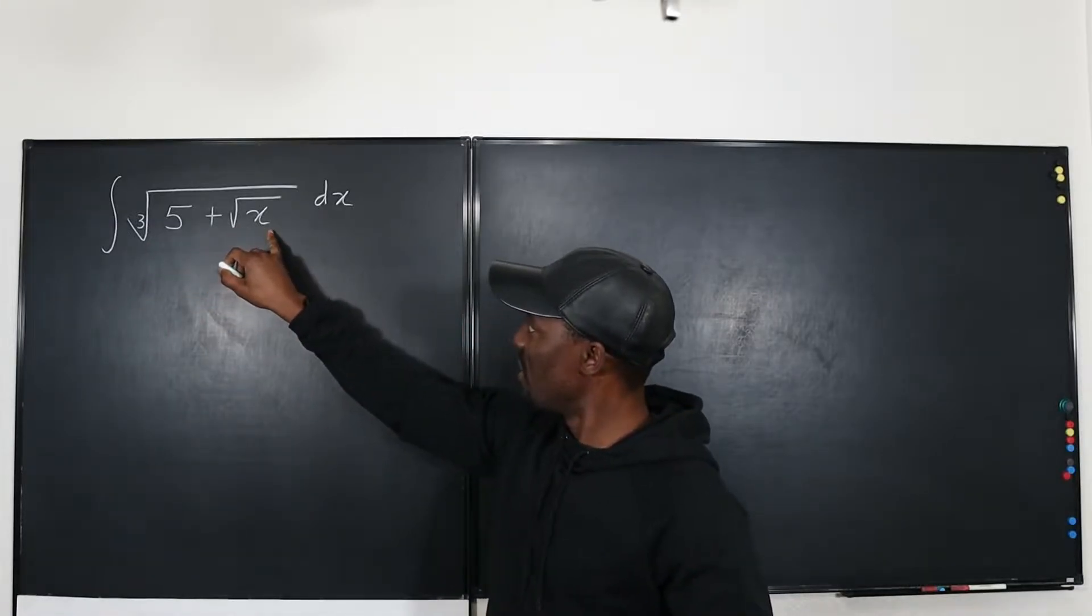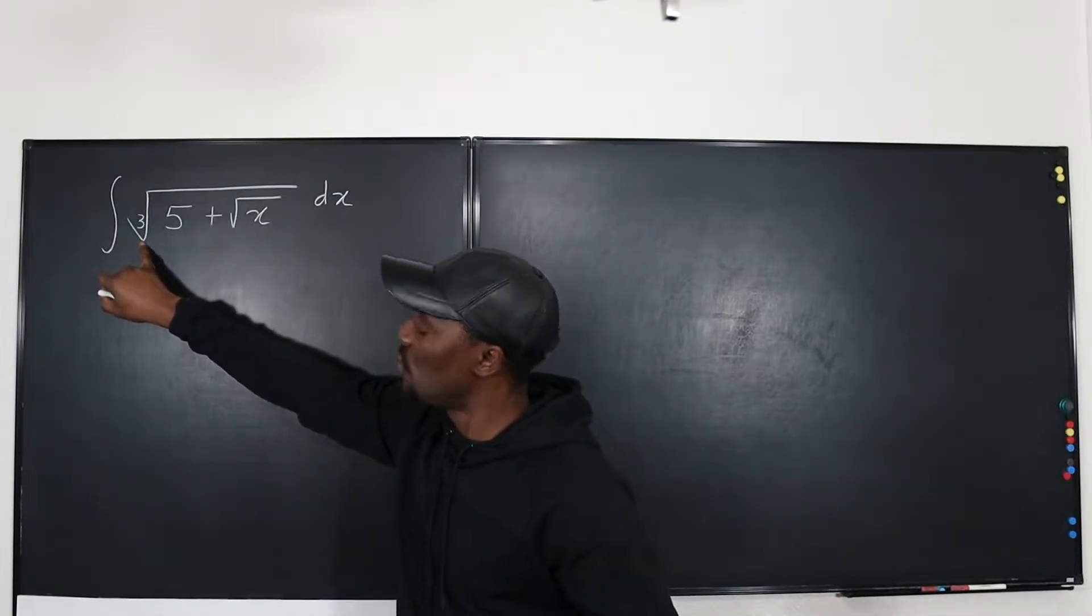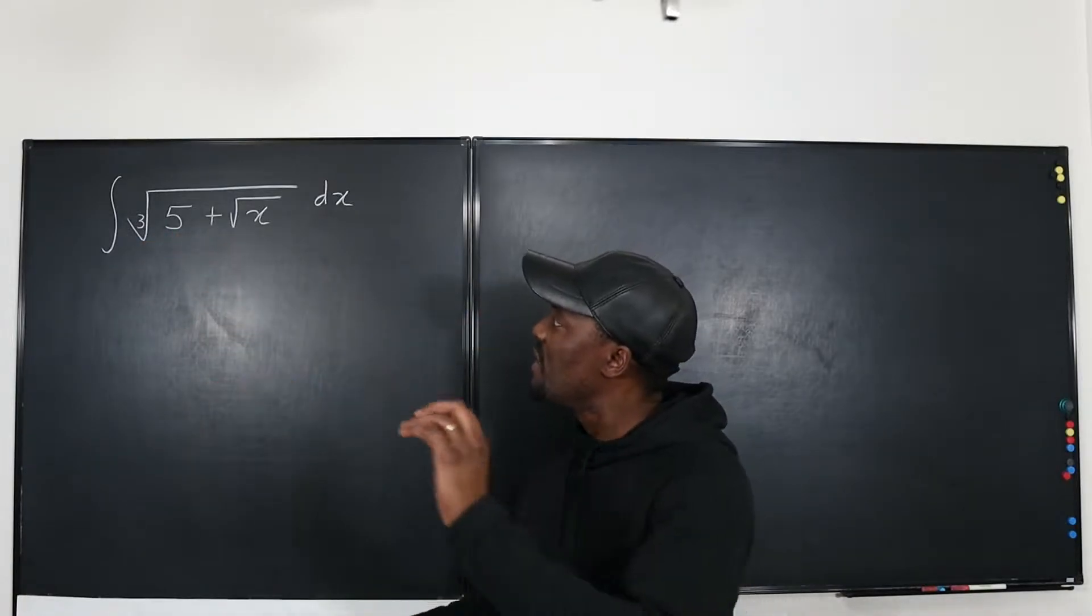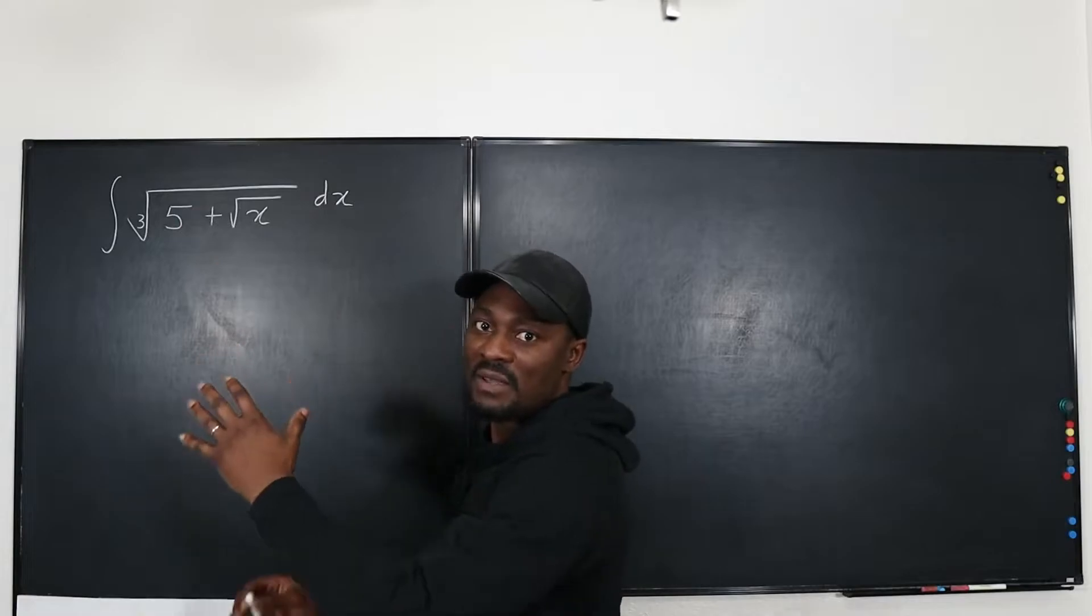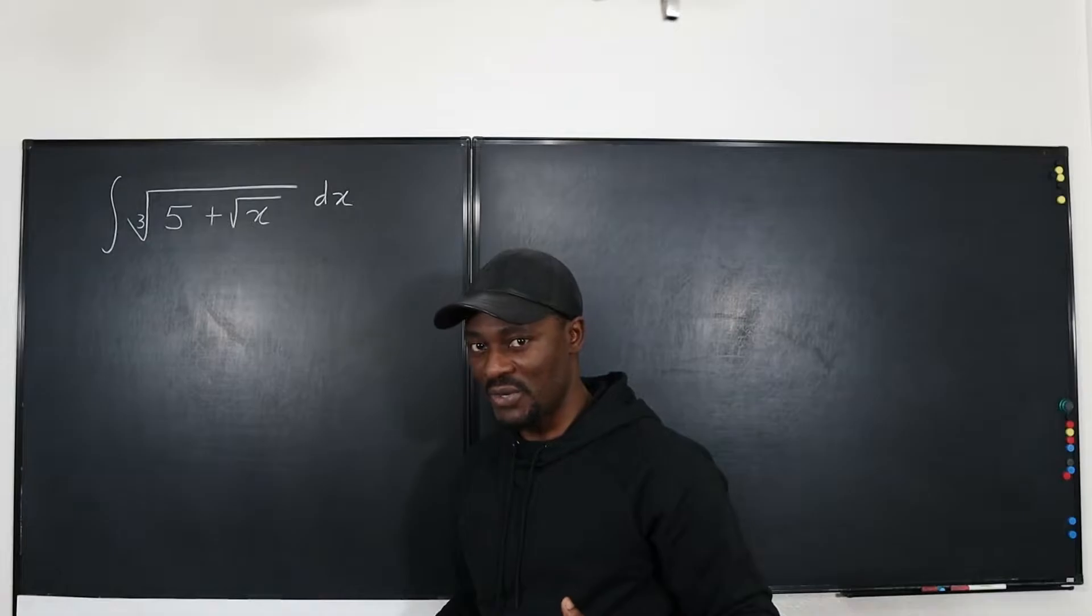Should I choose this one or should I choose the entire function that is under the bigger cube root? So this is a cube root, this is a square root. Well, because this is the bigger problem for me, the bigger one is what I'm going to choose. So the argument of the cube root function becomes my u.